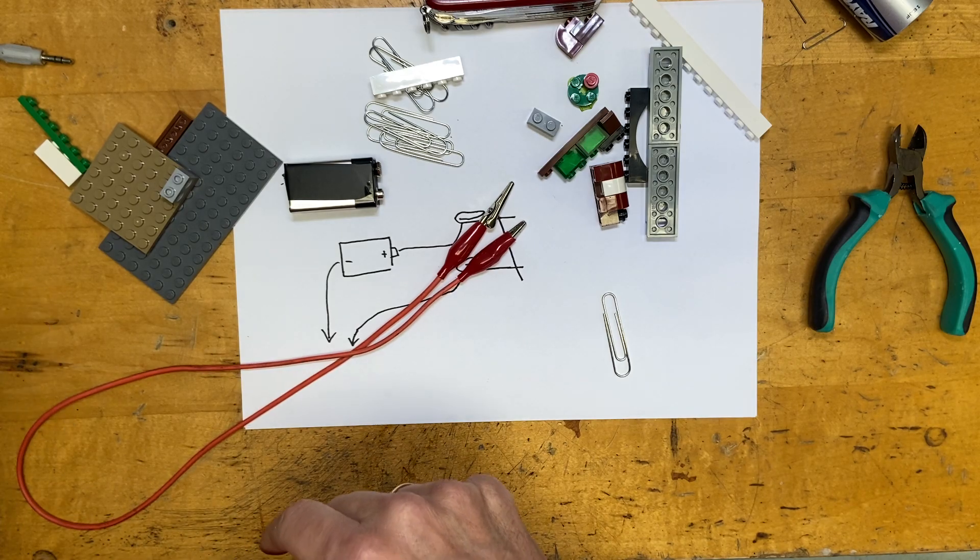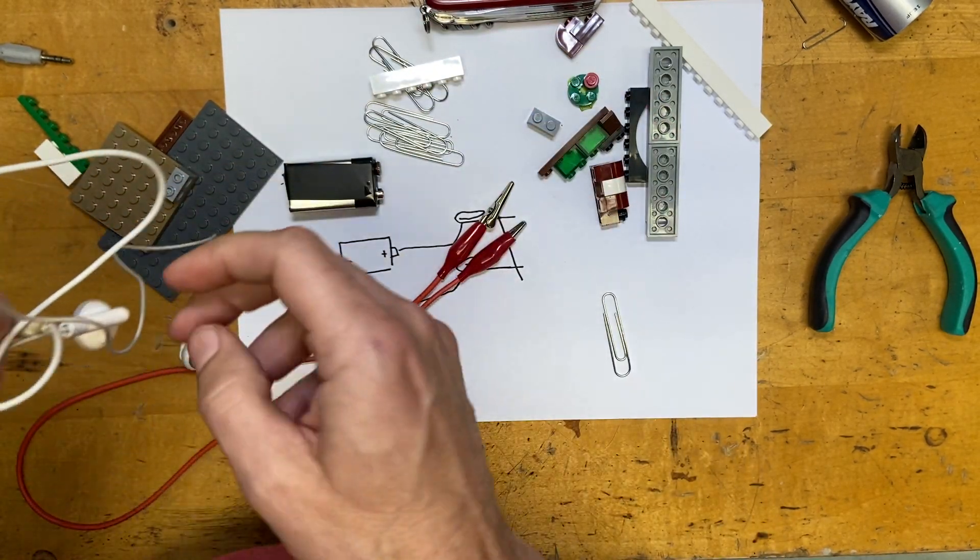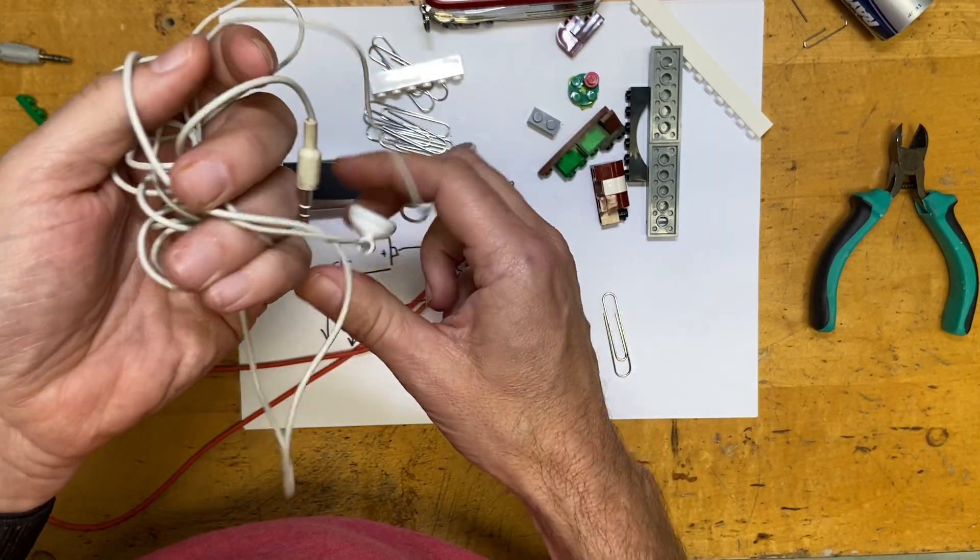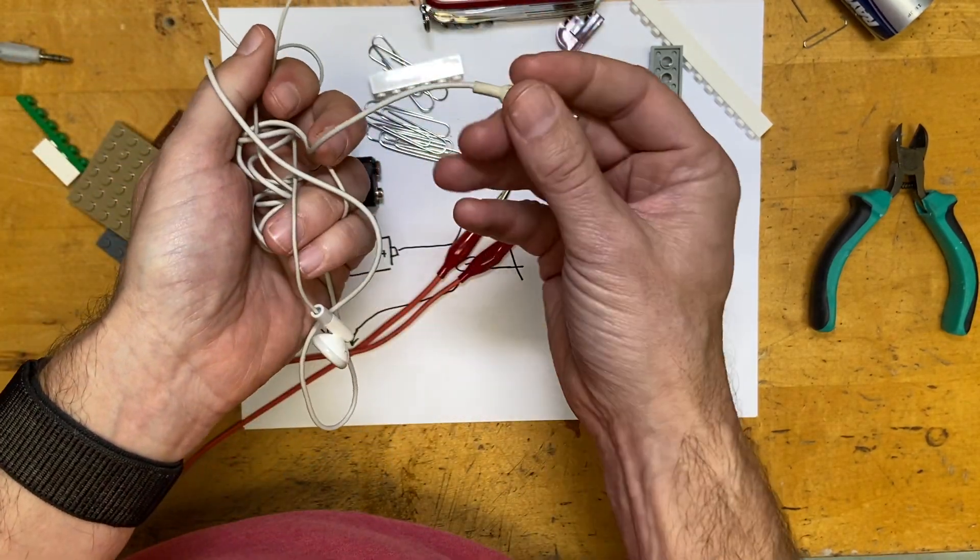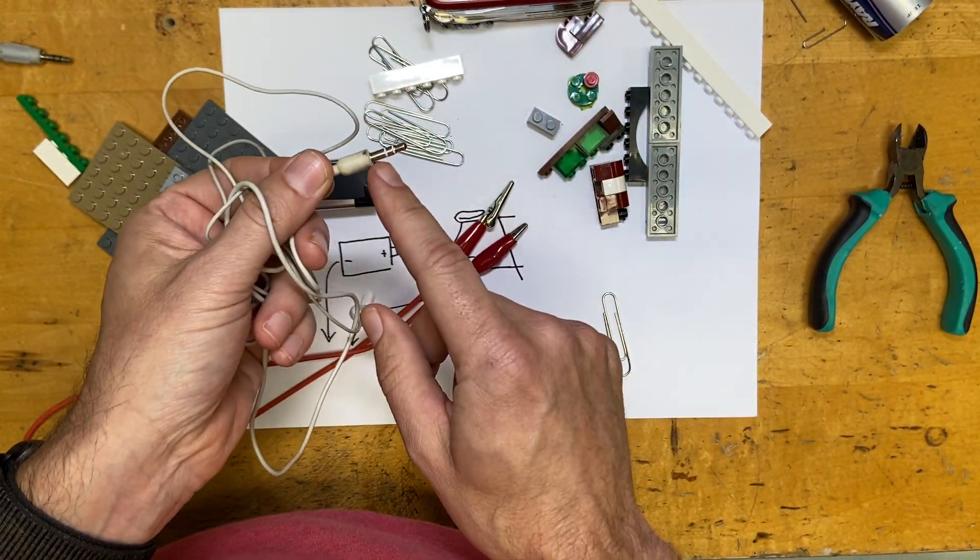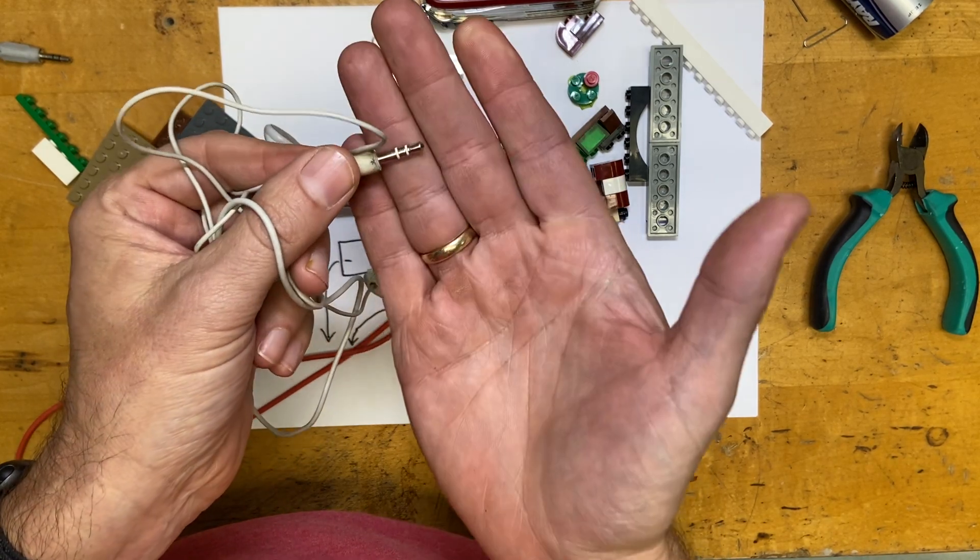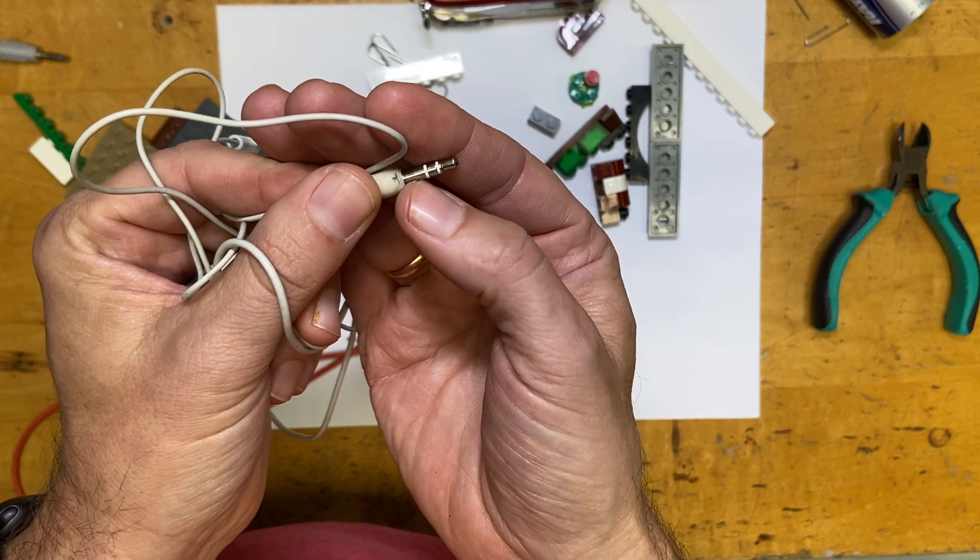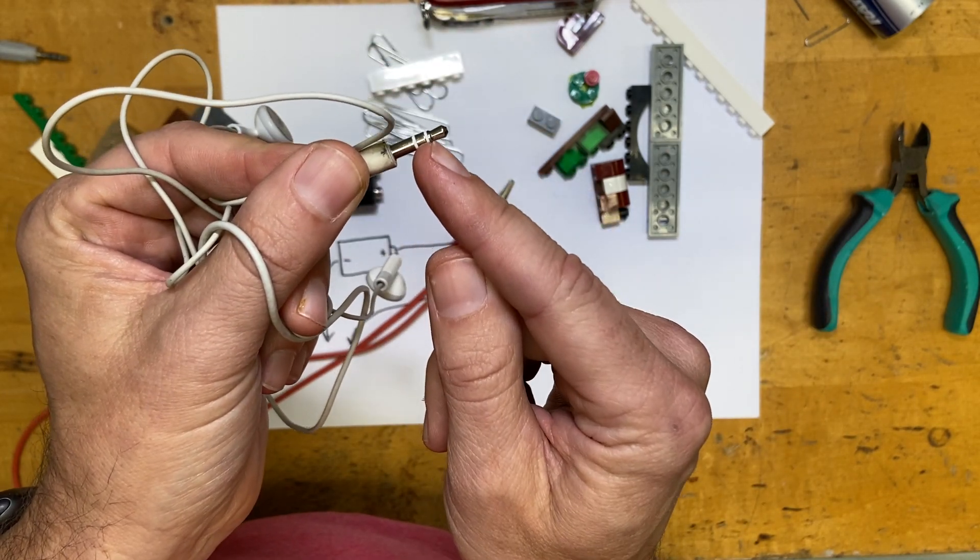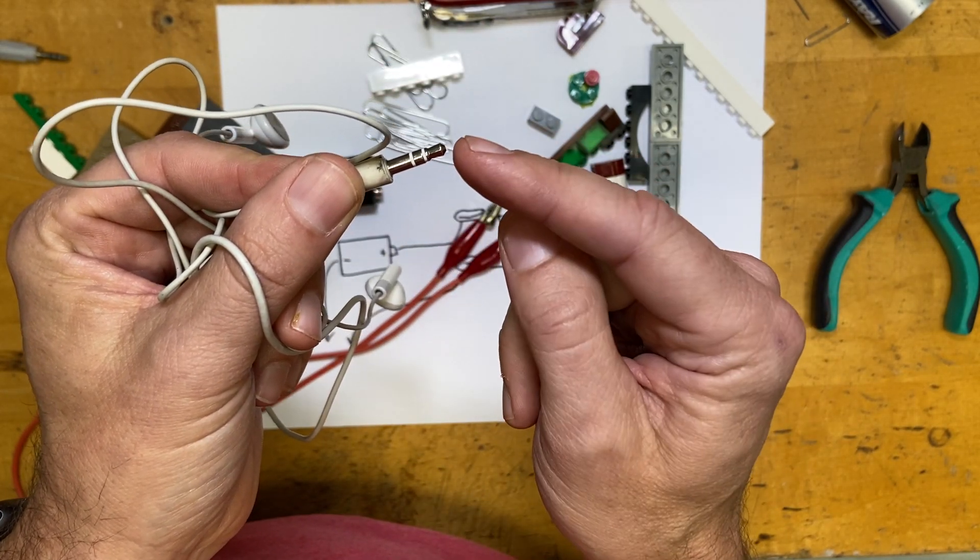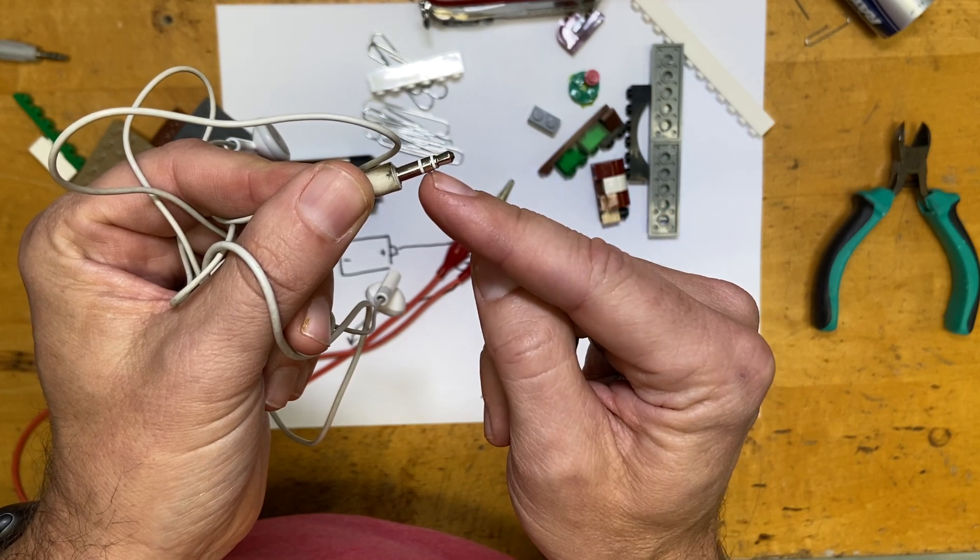Another thing you're going to need is some type of audio. This is an old pair of earphones. I'm not going to use these because if I did this, I could hear it, but you couldn't. The key thing is with this audio jack, there are three parts and so we're going to need to connect it to the outer part and the middle part.